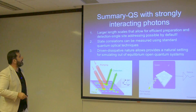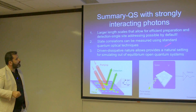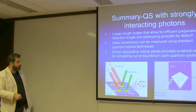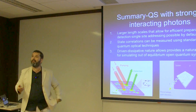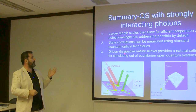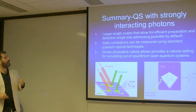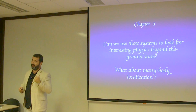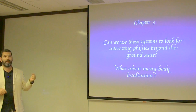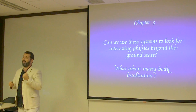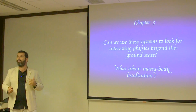To summarize this first part: you can use interacting photons to do several interesting things. The larger length scales compared to cold atoms allow efficient preparation and detection; single-site addressing is by default possible; you can detect the output light; and you can measure many-body states more easily. You can also do driven-dissipative open system physics naturally. But after quite some time, we managed to do very interesting closed-system physics on the superconducting chip of Google. The last 15 minutes will be about how you can use these systems to probe many-body localization.